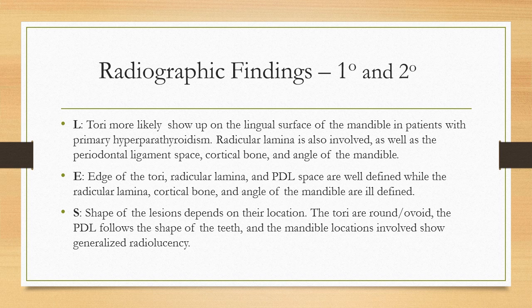L: Tori more likely show up on the lingual surface of the mandible in patients with primary hyperparathyroidism. Radicular lamina is also involved, as well as the periodontal ligament space, cortical bone, and angle of the mandible.